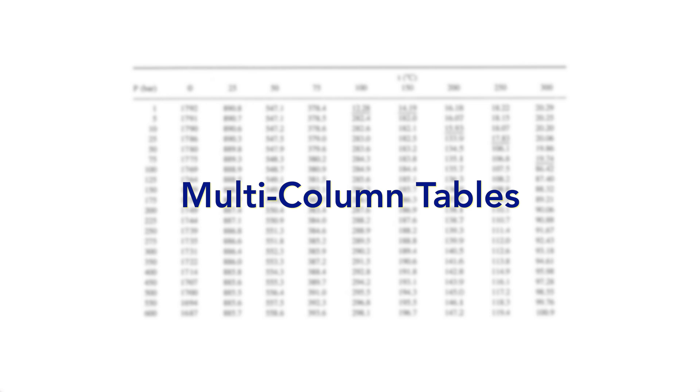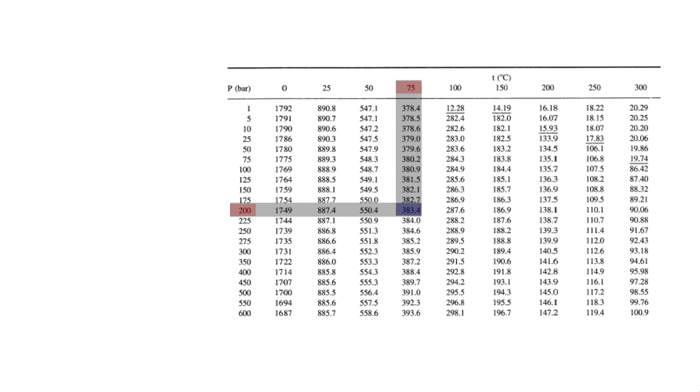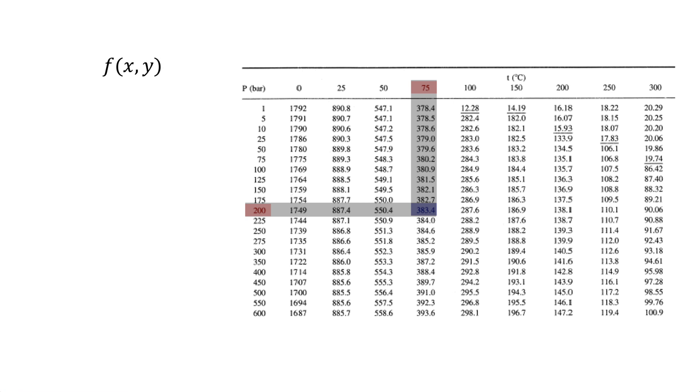We use two-dimensional interpolation when we have a data set of multiple columns, like scientific or statistical tables. As you see here, any value inside this table corresponds not to one but two values. One value is determined by the row, and the second value is determined by the column. In other words, any value inside the table is a function in x and y. In this video, I assume that x represents the rows and y represents the columns.